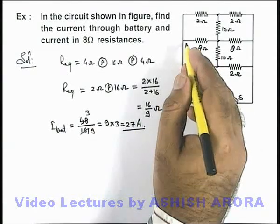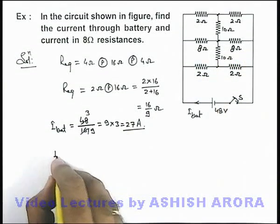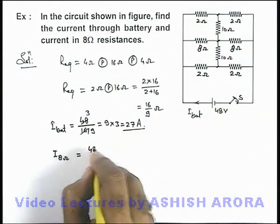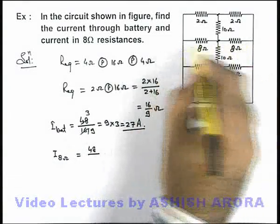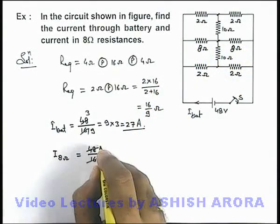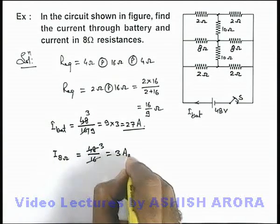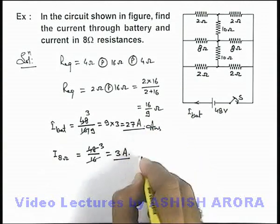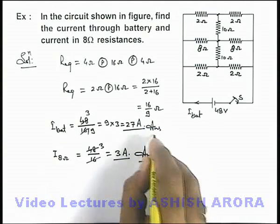And if we wish to find out the current through the 8 ohm resistances then current through 8 ohm resistances can be directly given as 48 by, the total branch resistance of 8 ohm will be 16, so this will be 3 times so this will be 3 ampere current that will be flowing through the 8 ohm resistances. So these are the 2 answers of this problem.